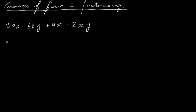Looking at the first two terms: what's common to the numbers is a 3 - we have a 3 here and a 6 here, so 3 will divide into both. There's an 'a' in one term but not the other, so we can't use that. We have a 'b' in both terms, so we can take b out. There's a 'y' in one but not the other. So if we take out 3b and divide 3ab by 3b, we're left with 'a'. So 3b times a gives 3ab.